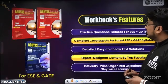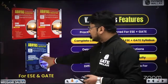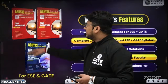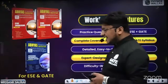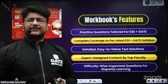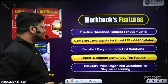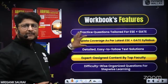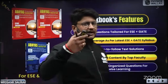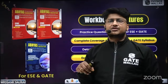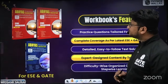Regarding the Abhyas workbook: there are three separate books — one for Engineering Mathematics and General Aptitude, and two for the technical part. All questions are at GATE and ESE levels, made by the faculty with very good quality. Questions are organized by difficulty level, making it a great practice booster for your preparation.